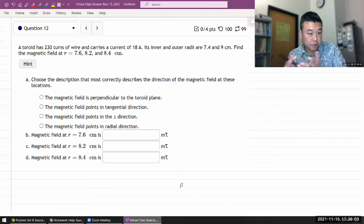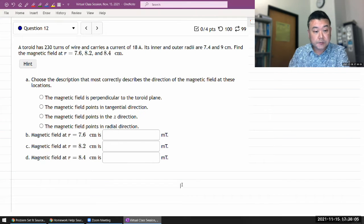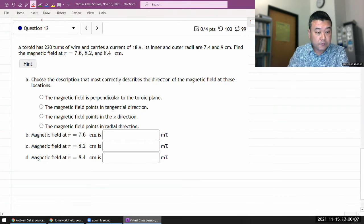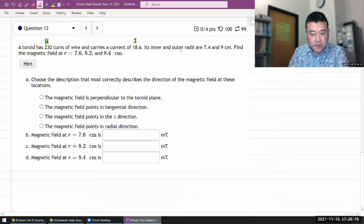It says we have a toroid with this many turns of wires and carries the current I, giving me the inner and outer radii. It has to find the magnetic field at these different points of r, and I'm glad to see that all these are between these two.